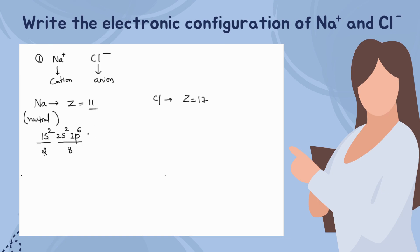The remaining electron enters into the third shell, the 3s sub-shell, and we fill it with only one electron. This is the outermost electron for sodium. The total electronic configuration is 1s² 2s² 2p⁶ 3s¹, or in shell notation: 2, 8, 1.